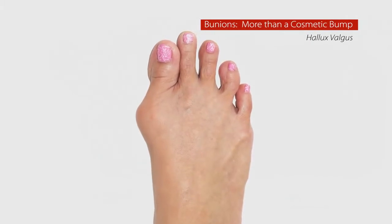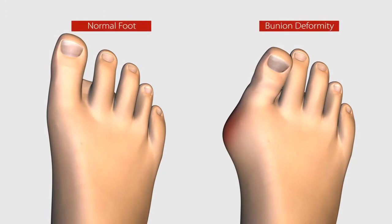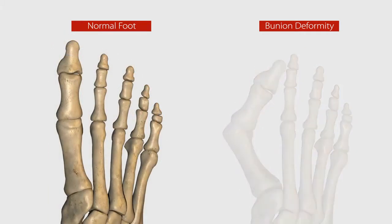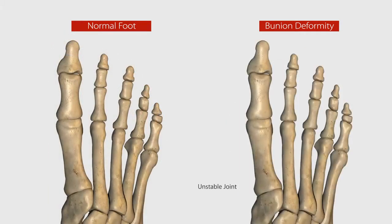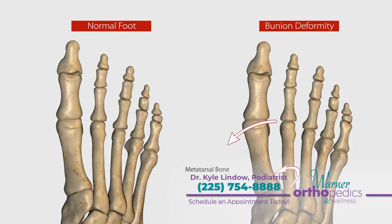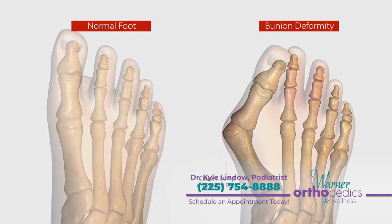Bunions, also known as hallux valgus, are more than just a bump. Many mistakenly believe bunions can simply be shaved off. In reality, bunions are complex deformities caused by an unstable joint in the middle of the foot. This unstable joint is the foundation of the problem — it allows your entire metatarsal bone to deviate out of alignment, forming the unsightly bump.